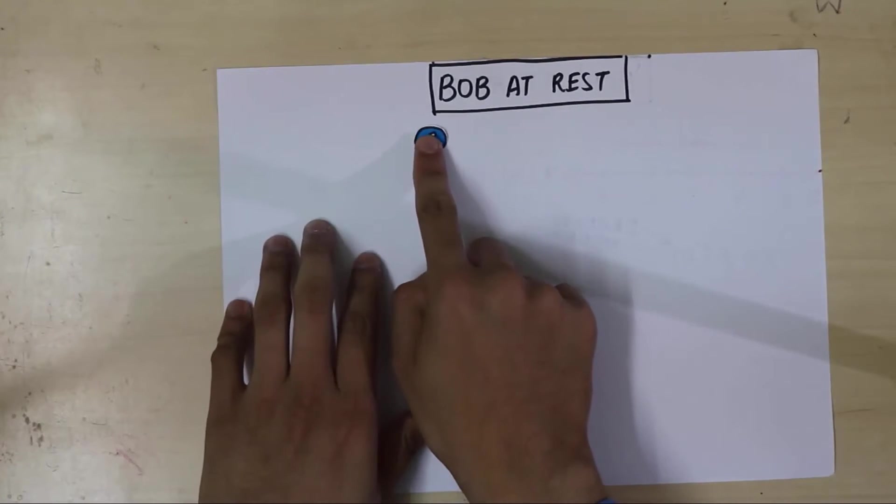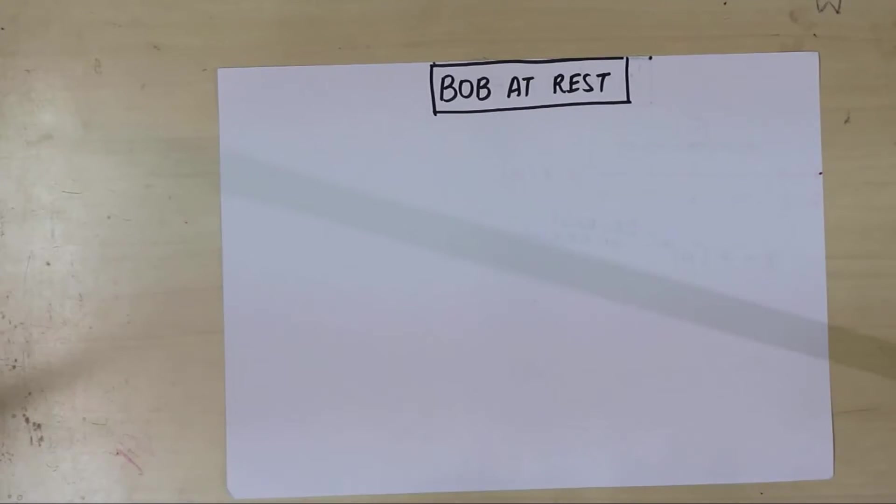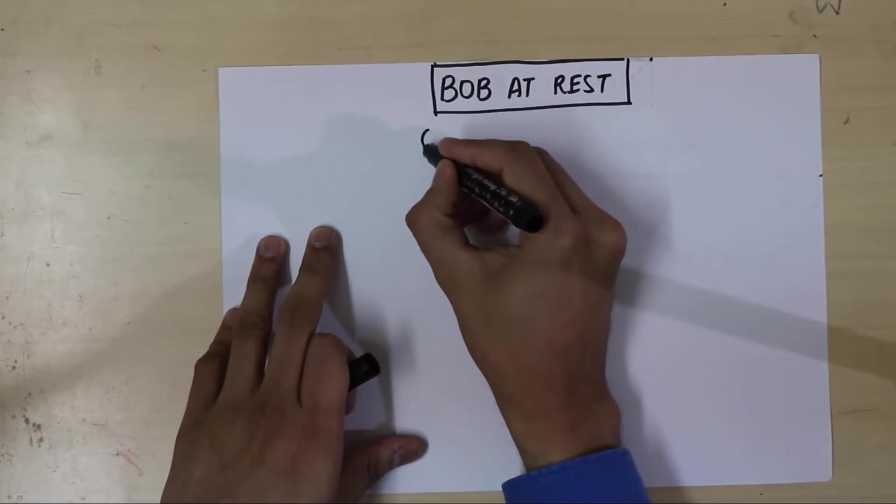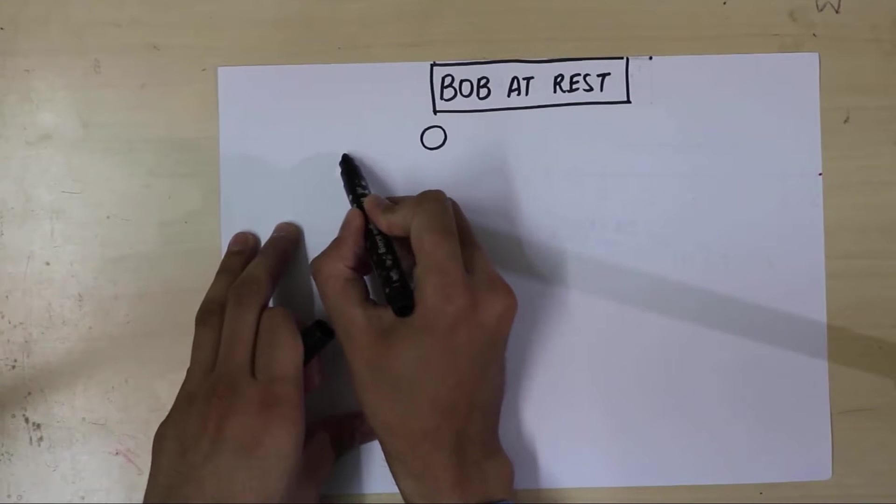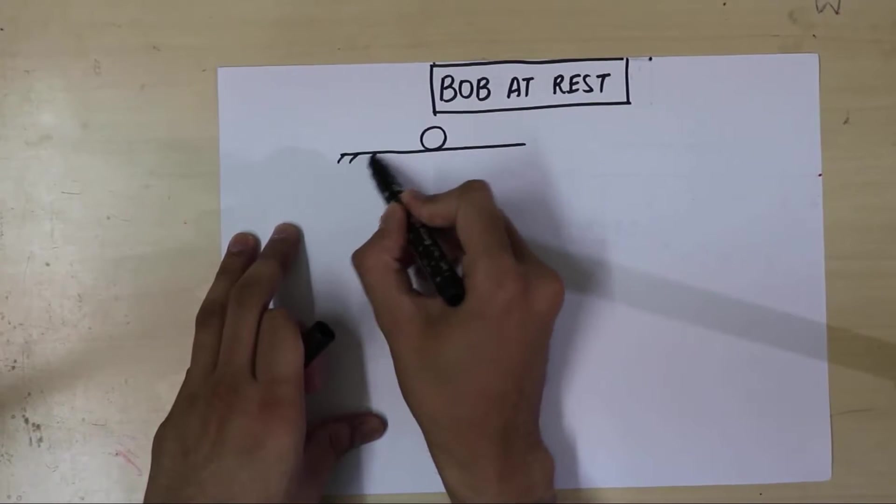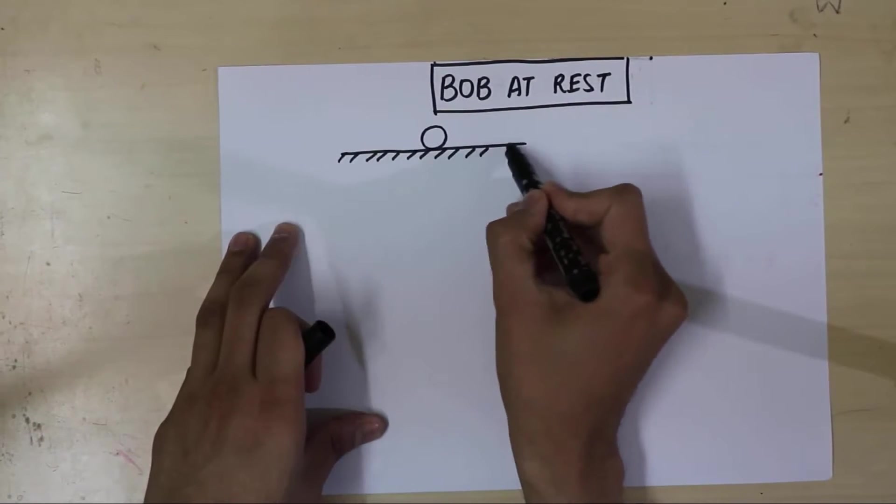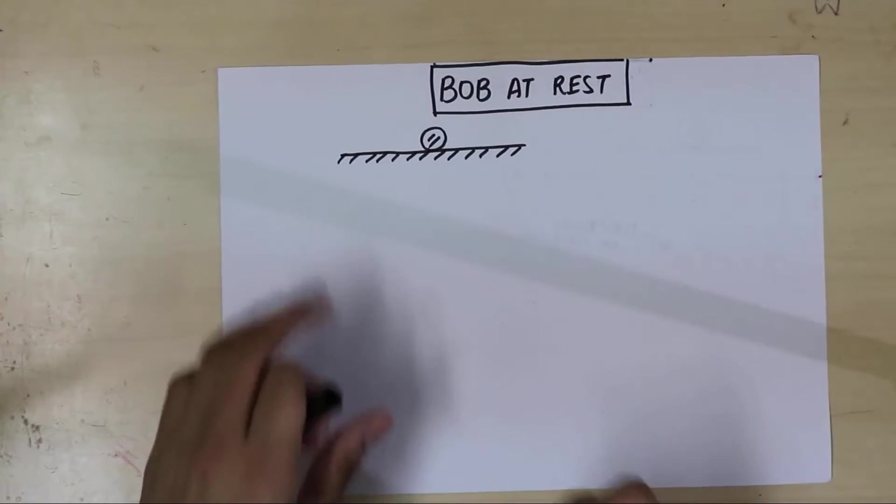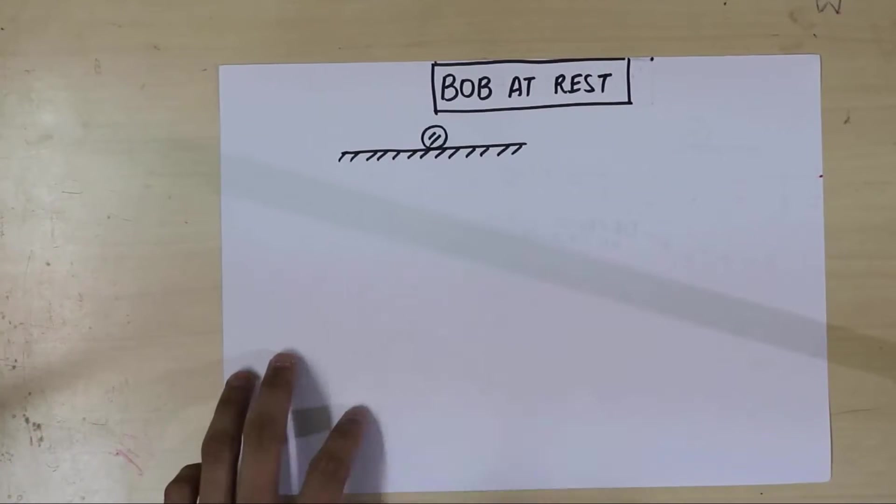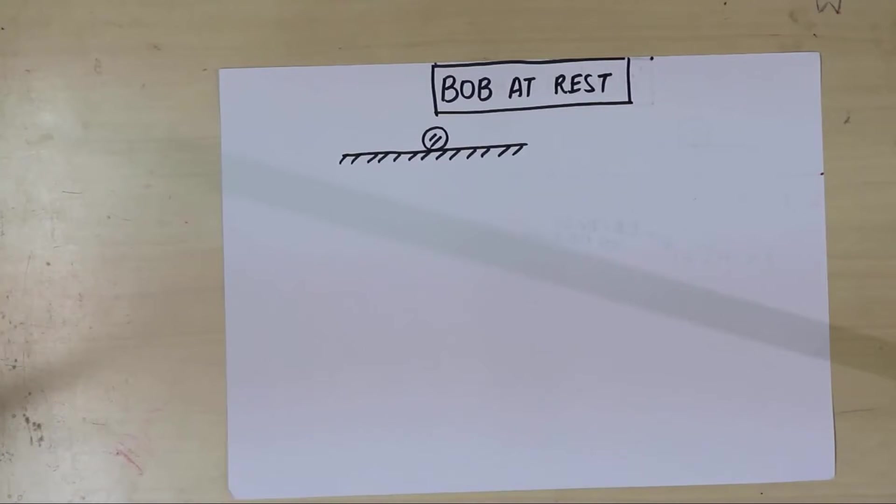Alright, now before we can start this, what we will do is make a drawing. I want you guys to do this all the time. Whenever you see something in physics, any situation, first check if you can draw something. So this is a decent drawing of what Bob looks like. And the next thing we need is an axis.